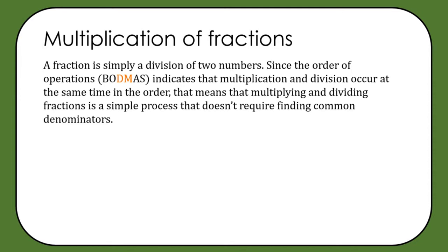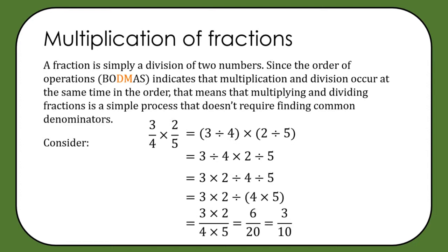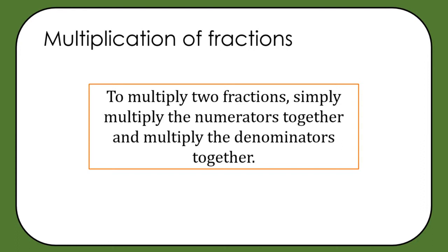Multiplication and division of fractions is more flexible — we don't need like terms or common denominators, because a fraction is a division and multiplication and division happen at the same point in the order of operations. For example, 3 quarters multiplied by 2 fifths: that's 3 divided by 4, multiplied by 2 divided by 5. We can multiply the numerators and multiply the denominators: 3 times 2 over 4 times 5 gives 6 over 20, which simplifies to 3 over 10.